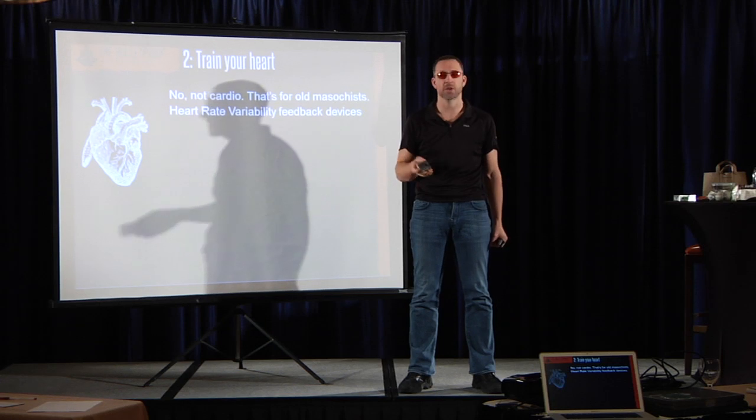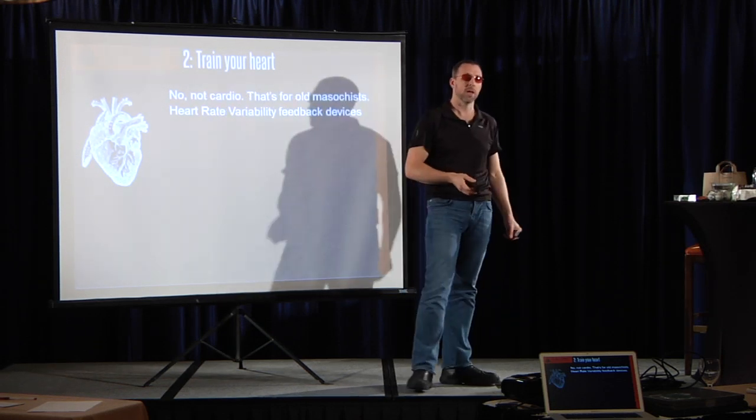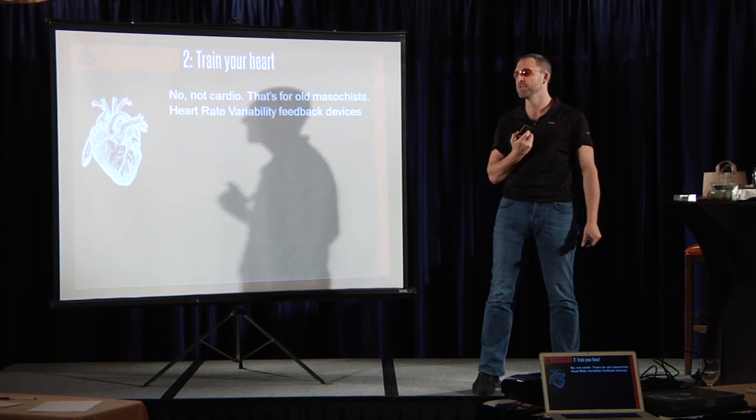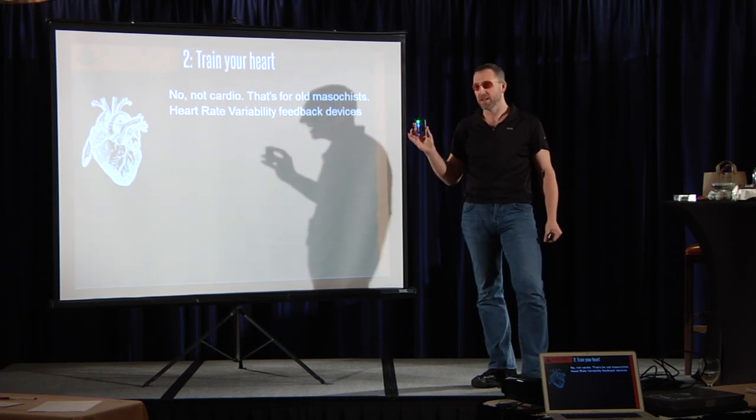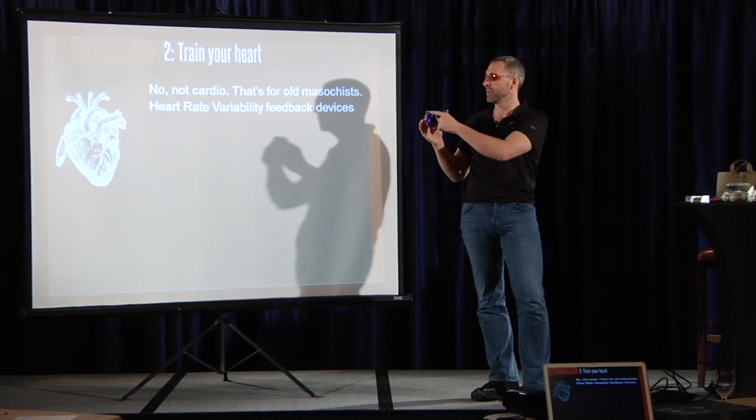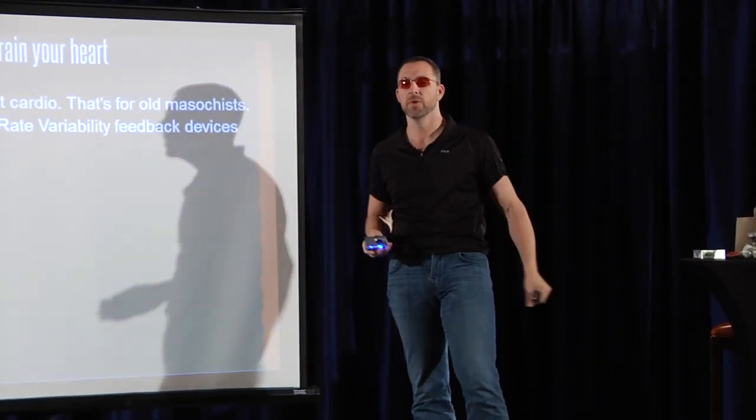A very large military organization just placed an order for these because they found out that troops who are trained to control their heart rate variability don't get post-traumatic stress disorder. This little thing has a blue light. Breathe in, breathe out. When you're doing your heart rate variability right, the light turns green. When you do it wrong, it's red.